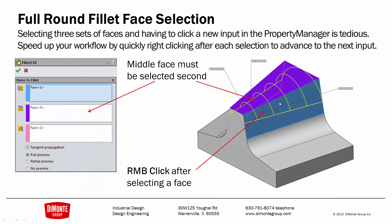Another example of Full Round Fillet is that it almost builds a loft-type geometry where you select three faces. You do need to pick three inputs — the start, middle, and end faces. A nice workaround is to simply right-click after each selection, and it will automatically move the selection into the next input box.